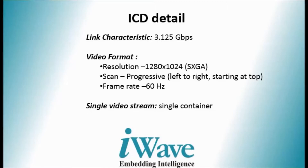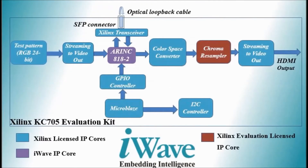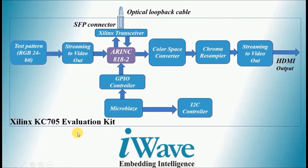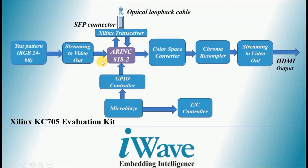Coming to the implementation part, the implementation block consists of ARINC 818 IP integrated with Xilinx transceiver and video IPs like test pattern generator, AXI streaming to video out, chroma resampler, and color space converter. Test pattern data is passed to the streaming to video out IP to get SXGA resolution video data frames, which is passed to ARINC 818 IP. The Xilinx transceiver is connected to the ARINC 818 IP on one side and connected to the SFP module on the other side.